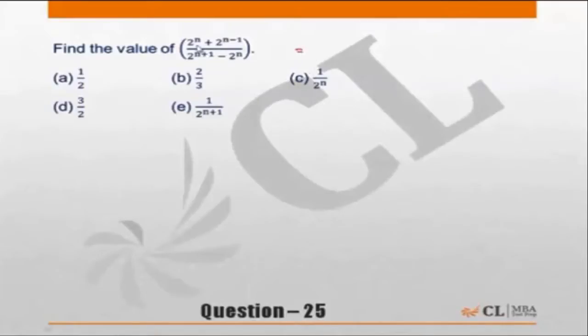In this, what most of the time we'll do is put in the numerator, it is 2 to power n plus 2 to power n minus 1. So let's take 2 to power n minus 1 as common. What will be left inside will be 2 plus 1. And in the denominator we can take 2 to power n as common.